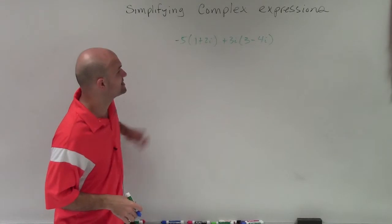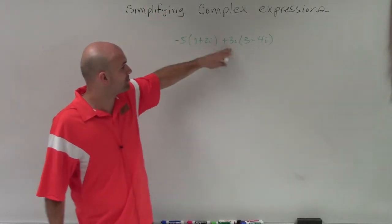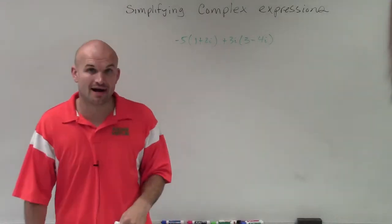All right, so what we're going to do in this case is we have negative 5 times 1 plus 2i plus 3i times 3 minus 4i.